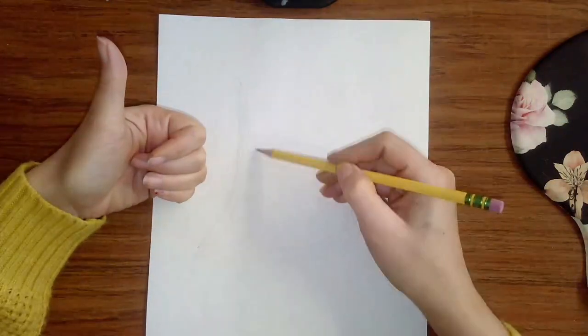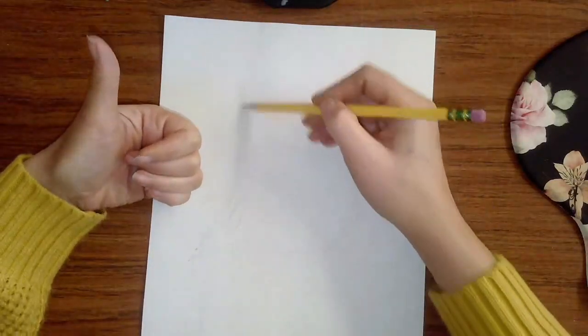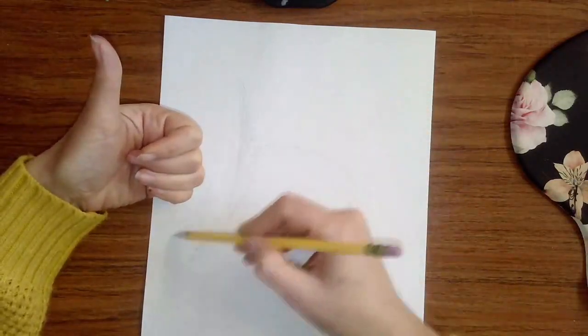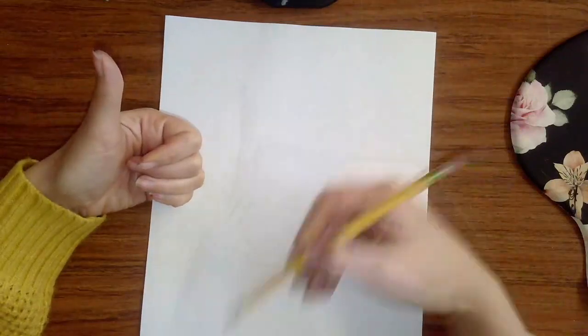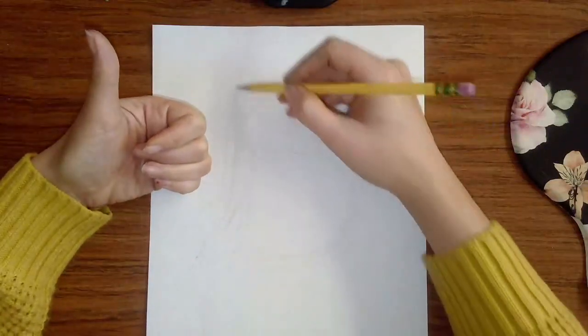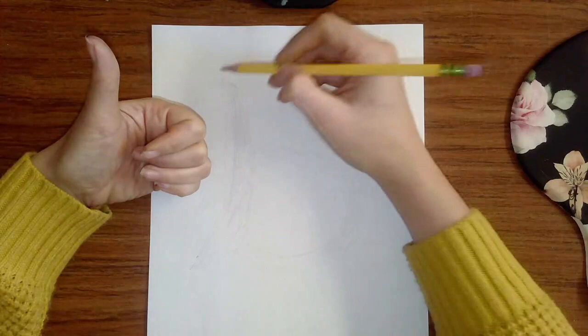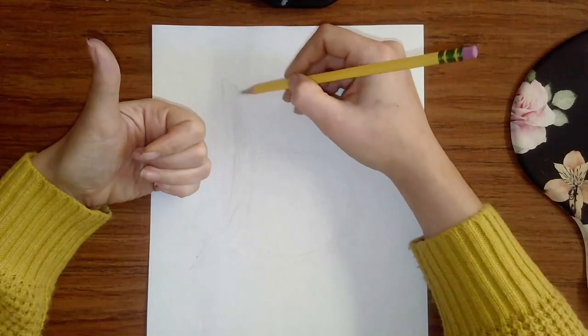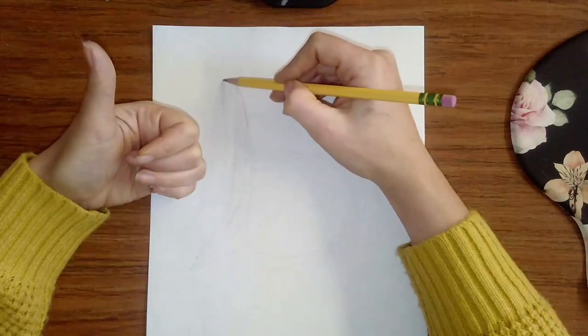Right. So I'll kind of beef this up a little bit again with super, super light lines. And eventually I'll be able to erase all this kind of scribble once I get the shape where I want it. Okay. So now I'm looking more into the details. I notice my fingernail is a little long, so it has kind of a point.